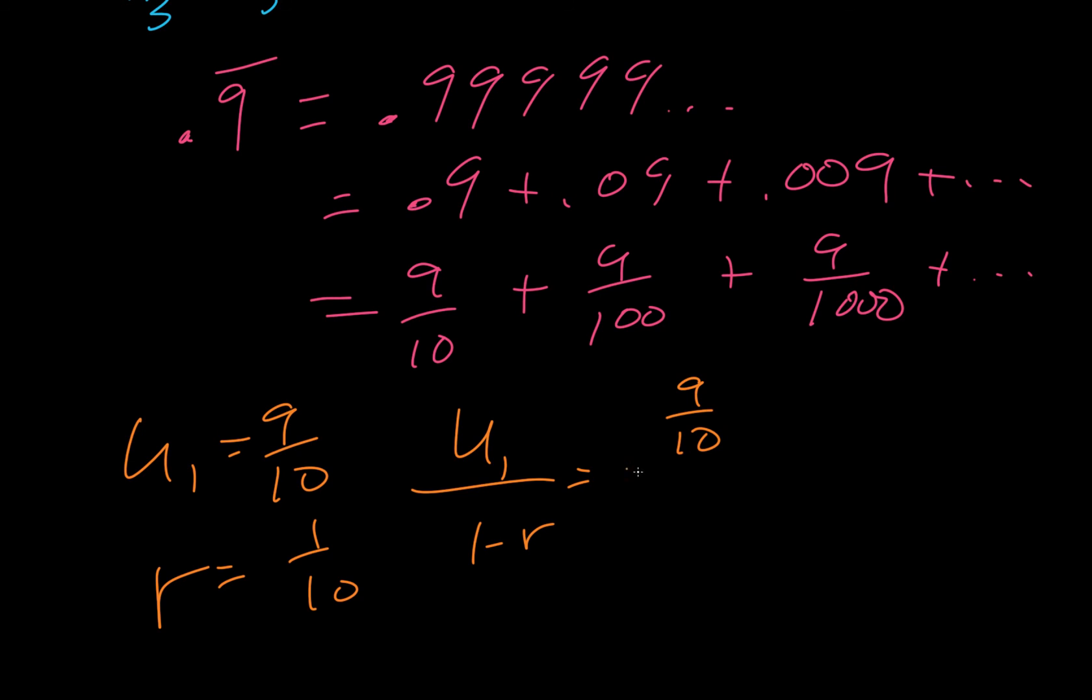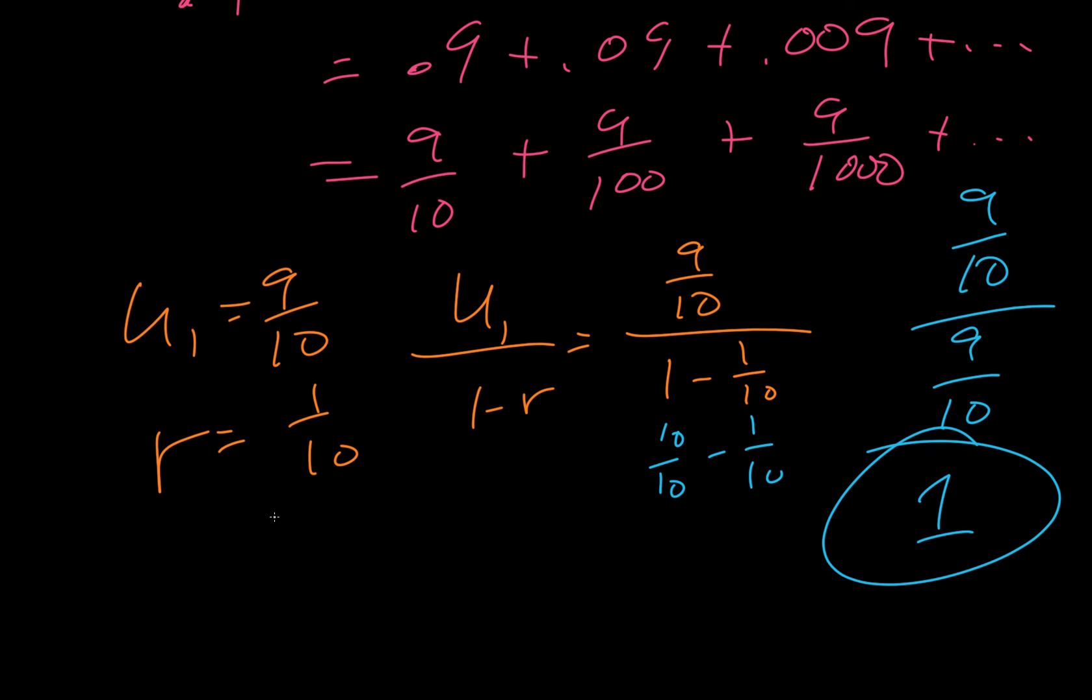So we have 9 tenths over 1 minus 1 tenth. We think of the 1 as 10 over 10. We subtract 1 over 10. So the bottom of that is 9 tenths. The top of that is 9 tenths. Any number over itself is 1. And so we proved that that is equal to 1. If you feel like that was a little too quick, we can just do the same thing. 9 tenths divided by 9 tenths. We flip the second one over. Multiply the top. Get 90. Multiply the bottom. 90. 90 over 90 is 1.